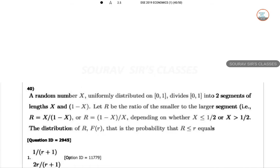Random number X is uniformly distributed on [0,1] and divides [0,1] into 2 segments of length X and 1-X. Let R be the ratio of smaller to the larger segment: R = X/(1-X) or R = (1-X)/X depending on whether X ≤ 1/2 or X > 1/2.